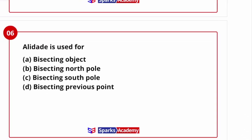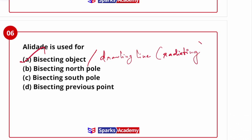Next question: an alidade is used for — options are bisecting objects, bisecting the north pole, bisecting the south pole, or bisecting a previous point. The alidade is a sighting instrument used for bisecting objects and drawing radiating lines. The answer is option A: bisecting objects, and it is also used for drawing radiating rays.